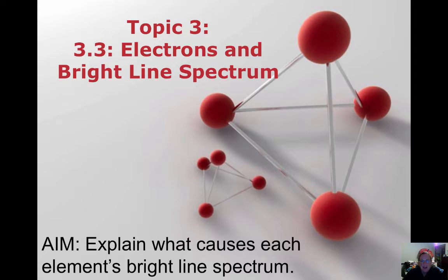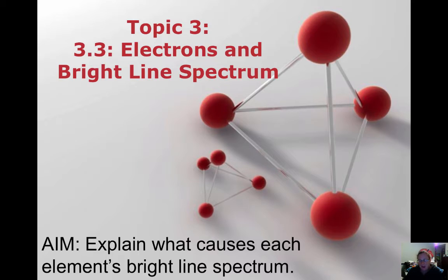Hello, welcome back. This is Topic 3, Part 3.3, Electrons and Bright Line Spectrum. I just showed you an opening of a fireworks show, which I'm sure we've all been to. And I'm sure you never sat at your fireworks show and thought about all the beautiful bright line spectrum that you were seeing as electrons were getting excited from being used in fireworks displays. But you actually have experience with this phenomenon. Today we're going to explain what causes each element's bright line spectrum.